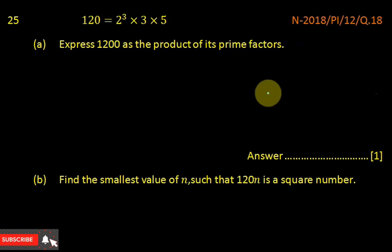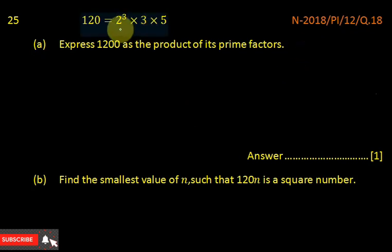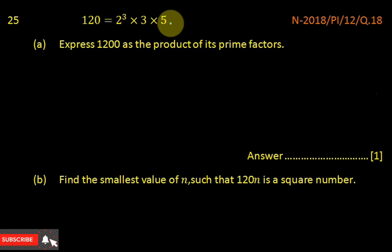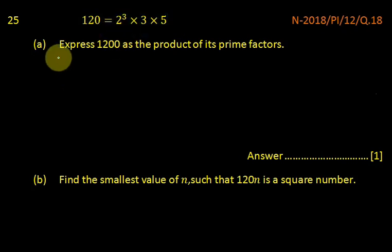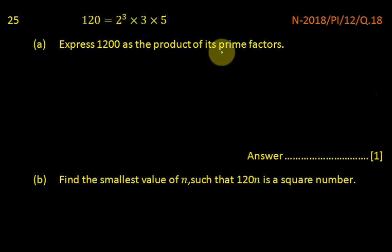1 November 2018. 120 is equal to 2 to the power 3 multiplied by 3 multiplied by 5. The factors of 120 are given and we are asked to express 1200 as a product of its prime factors.